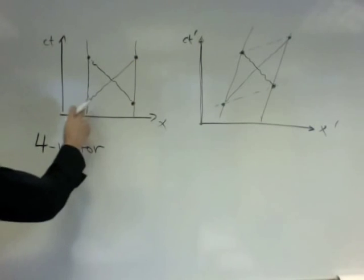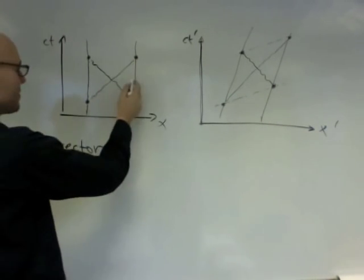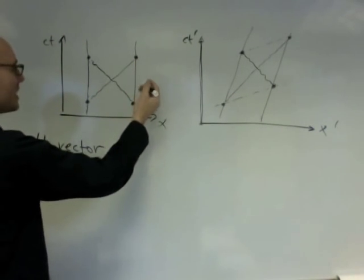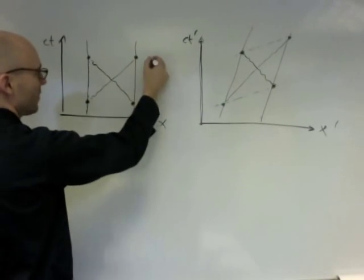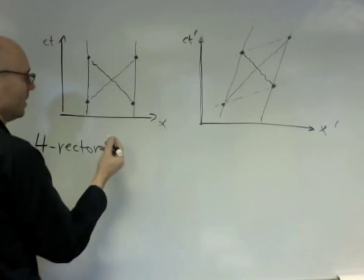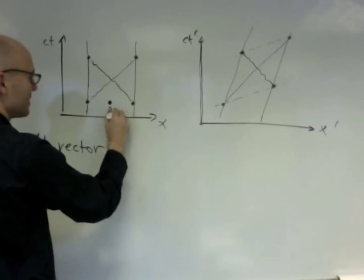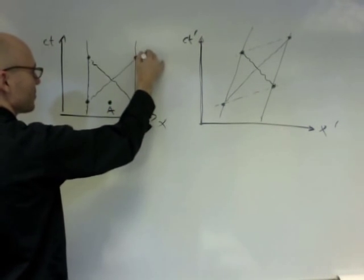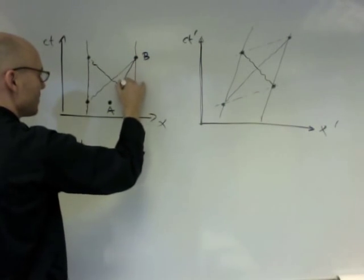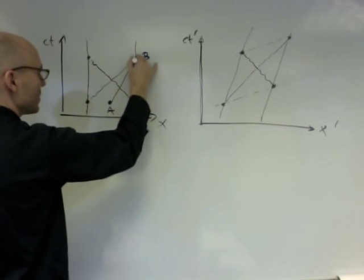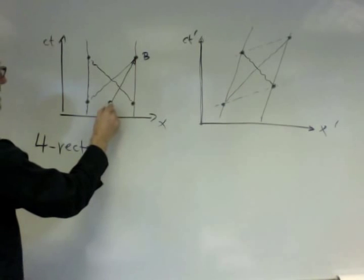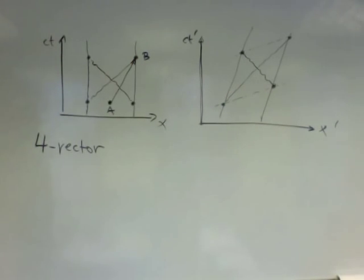And in this case, so let's imagine, let's think about two arbitrary events on this, in this frame. I'll just choose one. So let's choose an event here. Let's call it event A. And let's call this event here, which we already have, event B. And then I can think about the four-vector, which is the displacement from, on the space-time diagram, from event A to event B.